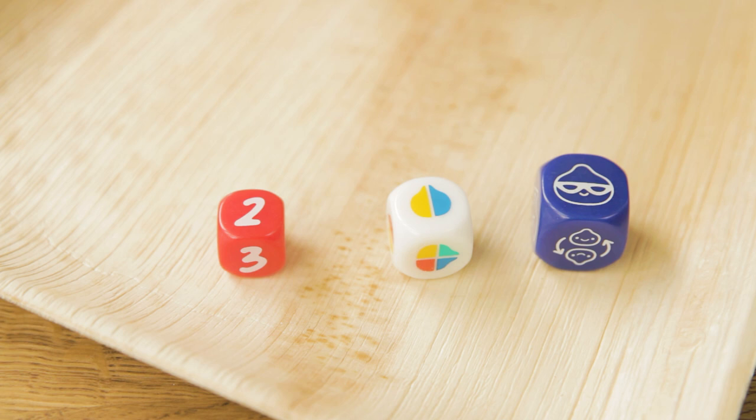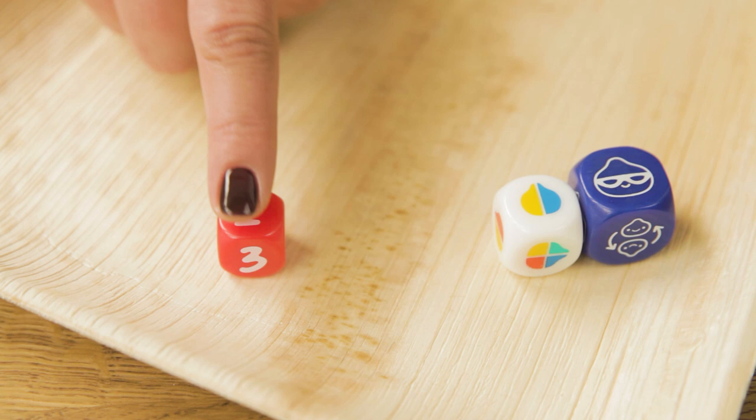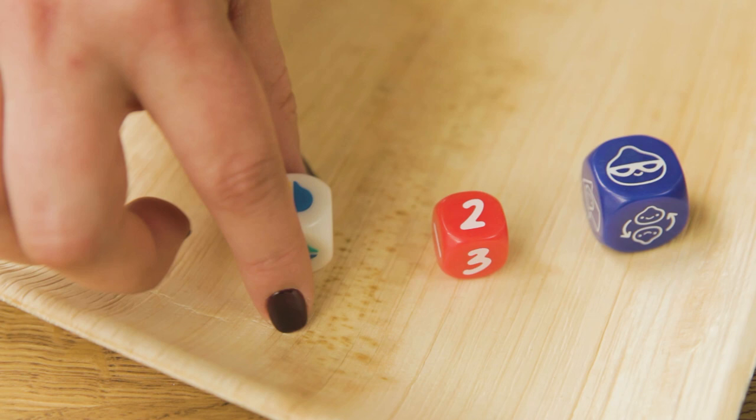But before we resolve these the person who rolled the dice, in this case me, must split the dice into two separate groups containing either two dice and one dice or three dice and zero dice.